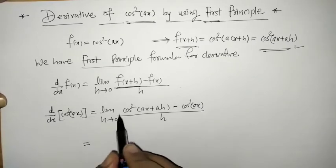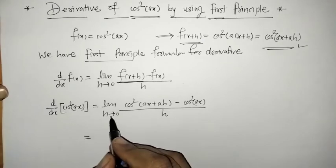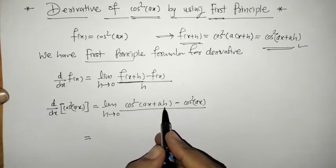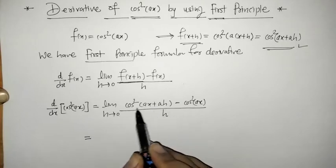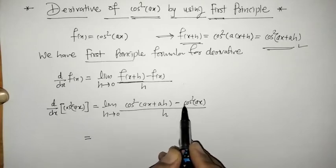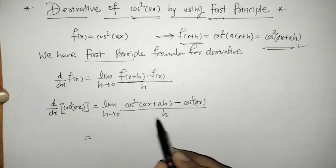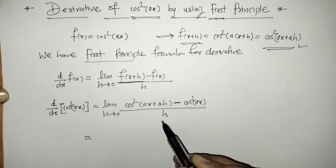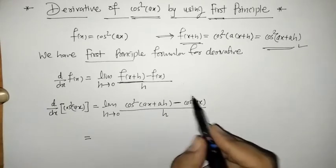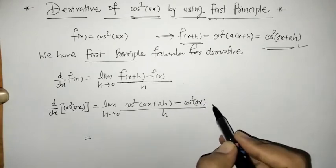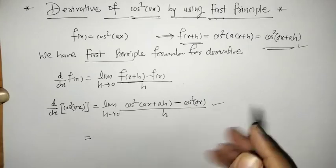Now we have to evaluate this limit, that means we put h equals 0 here. When we put h equals 0, we get cos squared ax minus cos squared ax, so the numerator gets 0 and similarly the denominator gets 0. That means to get a finite limit, we have to do some algebraic adjustment here.